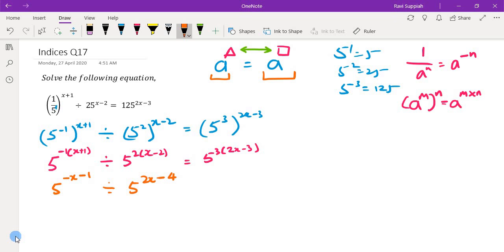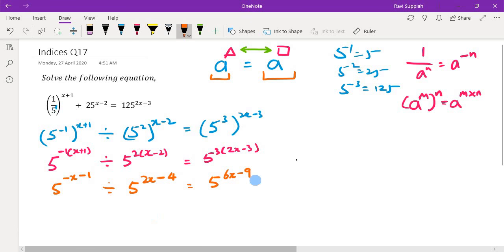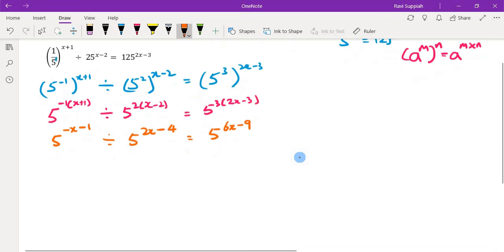So here I have 5 to the power of minus x minus times plus is minus 1, divided by 5 to the power of 2x, 2 times x and 2 times minus 2 so minus 4, equals to 5 to the power of 3 times 2 is 6x, 3 times 3 is 9 minus 9.